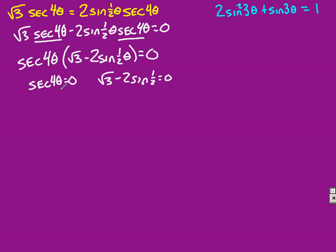In this one, if secant equals 0, that means that the reciprocal cosine should equal the reciprocal of 0. 0 over 1 will flip to 1 over 0, which is undefined. Now, cosine, your x value, is never undefined.